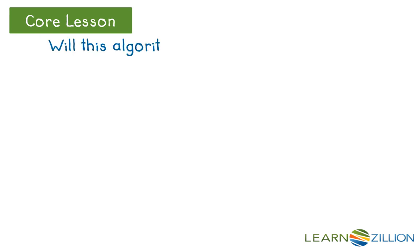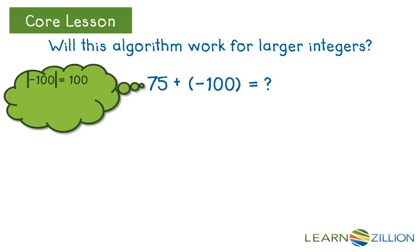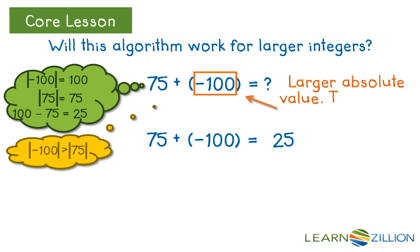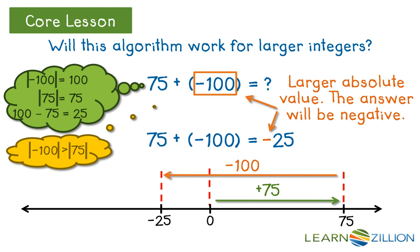Will this algorithm work for larger integers as well? Let's try 75 and negative 100. The absolute value of negative 100 is 100 and the absolute value of 75 is 75. 100 minus 75 is 25. Since negative 100 has the larger absolute value, the answer will be negative. We can check this on a number line: we move 75 units in the positive direction and then 100 units in the negative direction. Negative 25 is indeed the answer.